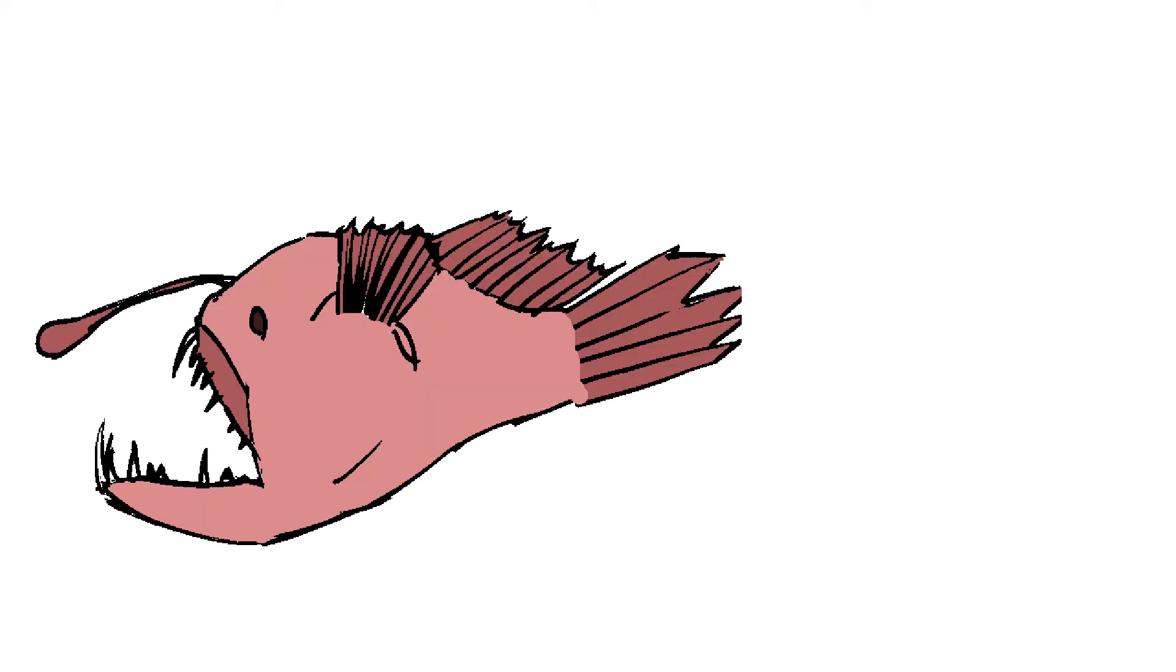The infamous anglerfish, for example, lures prey near its razor-sharp teeth using a light dangled in front of its gaping jaws. When it needs to mate, a male anglerfish becomes a bag of nutrients and sperm for the larger female by attaching to and fusing with the female. What a freak.